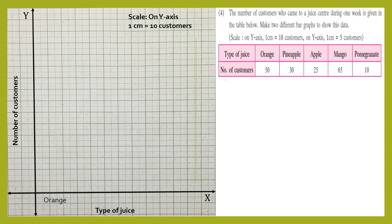On the x-axis, let's write the names of the juices taken by the customers. We leave the initial one centimeter, then one centimeter is taken by orange. We leave one centimeter and the next is pineapple. Then leaving one centimeter, the next is apple. Likewise, leaving one centimeter, the next is mango, and then leaving one more centimeter, the next is pomegranate.